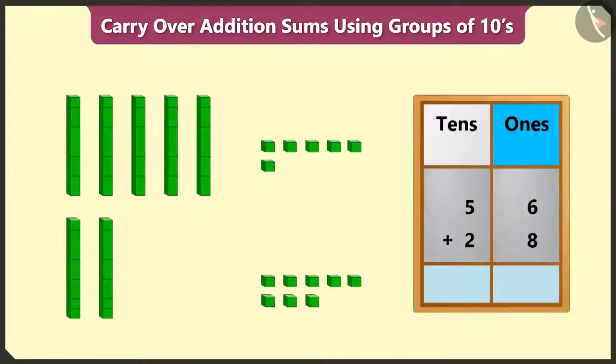First of all, we will add the numbers in the ones place. 6 ones added to 8 ones will equal 14. This means 6 ones and 8 ones added together will equal 14 ones.